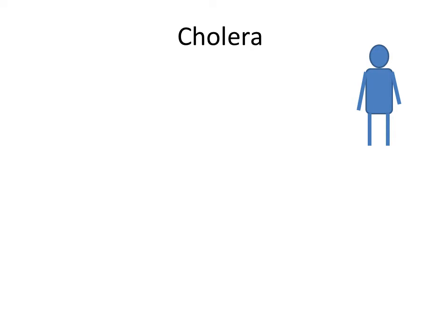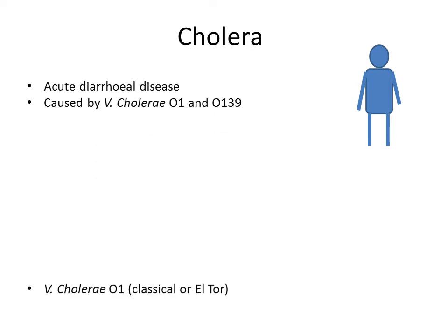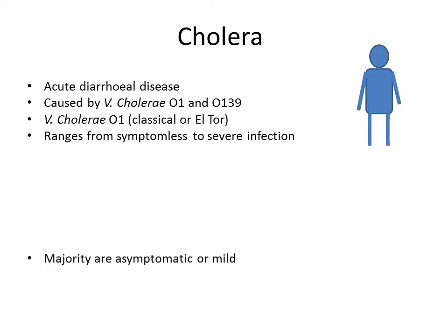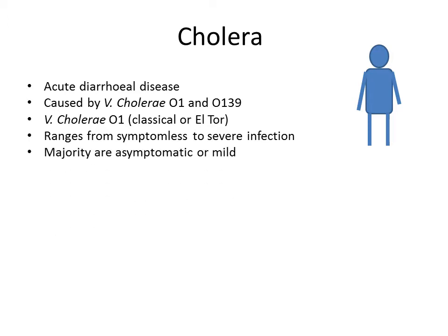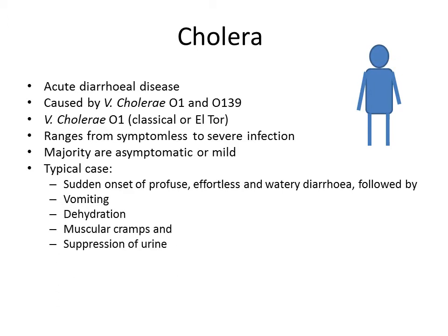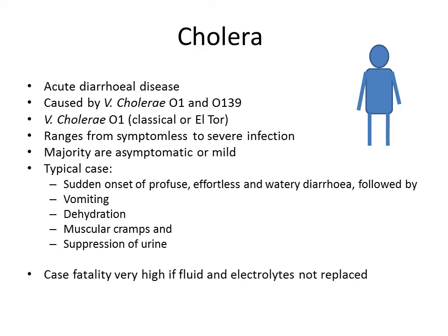Cholera is an acute diarrheal disease caused by Vibrio cholerae O group 1 or O group 139. The infection ranges from symptomless to severe, and the majority of cases are either asymptomatic or just mild. But a typical case is characterized by sudden onset of profuse, effortless, watery diarrhea followed by vomiting, dehydration, muscular cramps, and suppression of urine. The case fatality can be very high if fluids and electrolytes are not replaced, ranging from 30 to 40 percent in untreated cases.